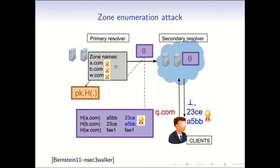If it is not in the database — for example, q.com is not in this database in this toy example — then the secondary resolver will say that it's not in the database, and as a proof will return the adjacent hashes. So if the hash of q.com falls within a certain range, the secondary resolver will return these pairwise hashes along with the signature by the primary resolver to prove non-membership. A client can ask for domain names not in the database and collect these hashes to mount a brute force offline dictionary attack.